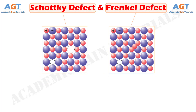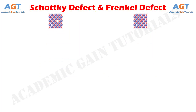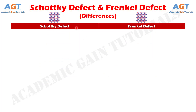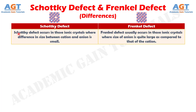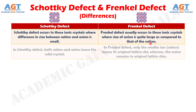Let's look into the basic differences between Schottky defect and Frenkel defect in a tabular form. Difference number 1: Schottky defect occurs in those ionic crystals where the difference in size between cation and anion is small, whereas Frenkel defect usually occurs in those ionic crystals where the size of the anion is quite large as compared to that of the cation.